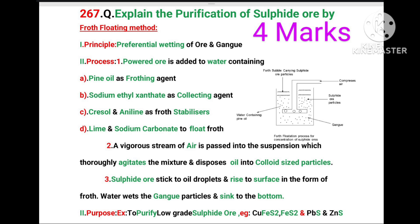A vigorous stream of air is passed into the suspension, which thoroughly agitates the mixture and disperses oil into colloidal-sized particles. Sulphide ore particles stick to the oil droplets and rise to the surface in the form of froth. Water wets the gangue particles and they sink to the bottom.